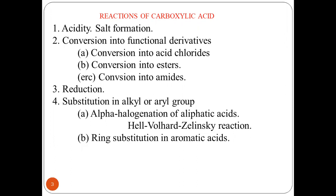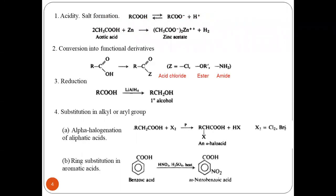Now let us understand one by one. Acidity and salt formation: carboxylic acids react with metals to give their salts. Acids are converted to functional derivatives like acid chlorides, esters, and amides. Reduction of acids using a suitable reducing agent gives alcohols. Substitution in aliphatic carboxylic acids gives alpha halo acids, and ring substitution in aromatic acids includes nitration and similar reactions.